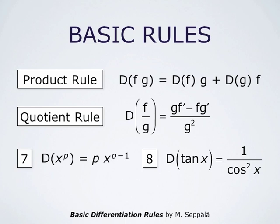The power rule states that the derivative of x to the power p is p times x to the power p minus 1. This is valid for all powers p; however, in this video we discuss this rule only for positive integer powers p. Rule number 8 says that the derivative of tangent of x is 1 divided by cosine squared of x.